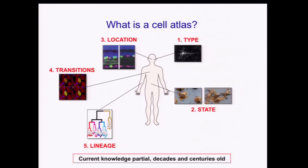Each and every one of these five aspects — our knowledge about it is limited, some less, some more. It's also very rarely informed by genomic information. It's mostly done by pre-genomic tools. Some of this knowledge is years old, a lot of it is decades old, and some of it is actually centuries old.